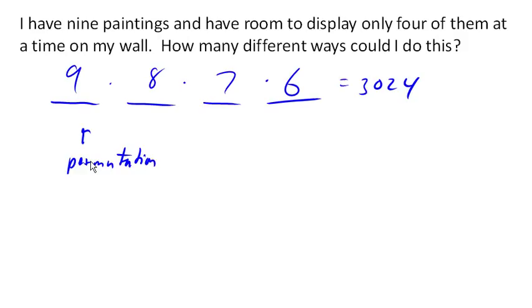The usual notation is NPR, where N is the number of items or number of choices, and then R is how many we're going to pick, the number we pick.